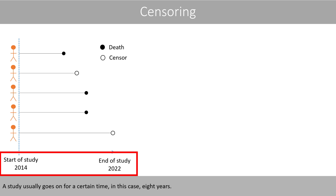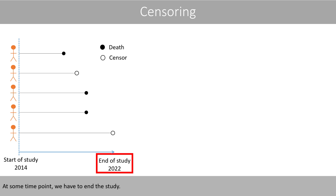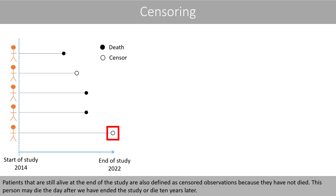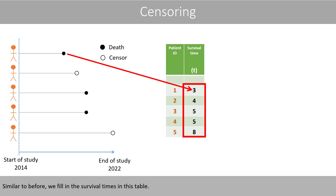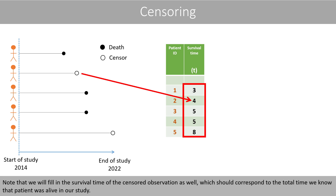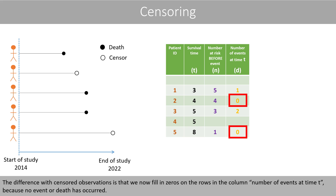A study usually goes on for a certain time, in this case eight years. At some time point, we have to end the study. Patients that are still alive at the end of the study are also defined as censored observations because they have not died. Similar to before, we fill in the survival times in this table, including the survival time of the censored observation, which corresponds to the total time we know the patient was alive in our study. The difference is that we fill in zeros in the column for number of events at time t, because no event or death has occurred.